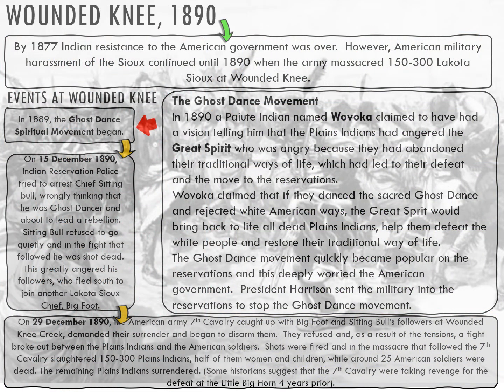One of the last hurrahs of the Indians is Wounded Knee — it's almost literally the last dying act of resistance. Wounded Knee is a last-ditch attempt to be independent, because after the Battle of the Little Bighorn things go downhill for the Indians. Indian resistance peters out. The military harassment of Indians continues and the army massacres up to 300 Lakota Sioux at Wounded Knee.